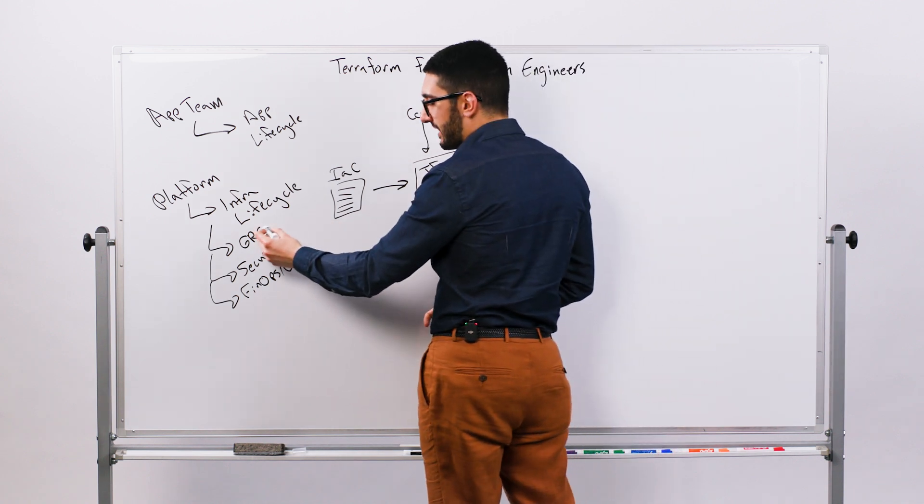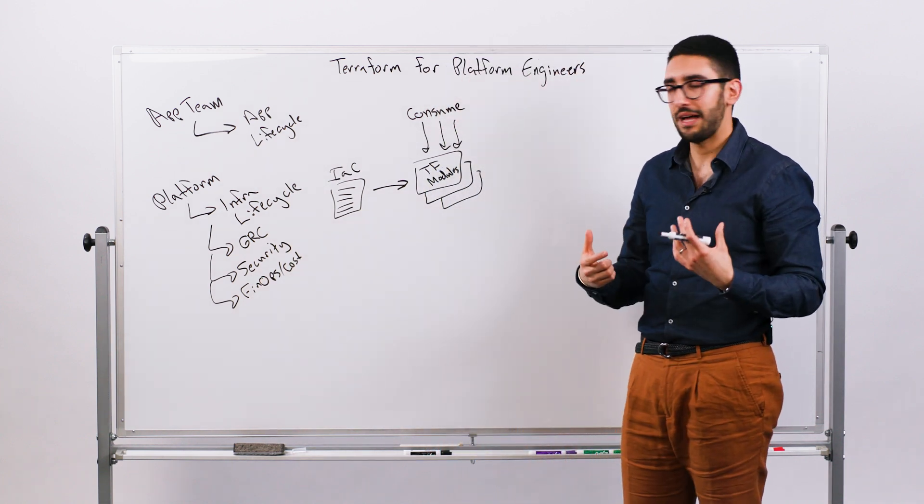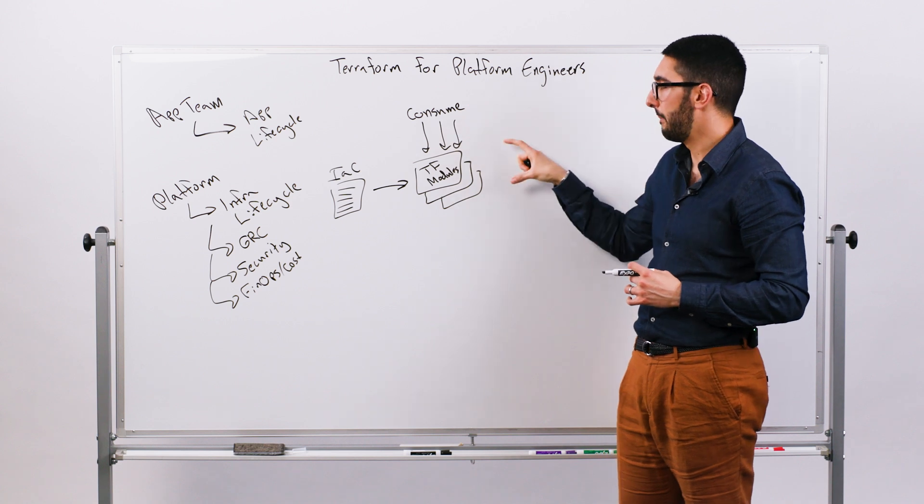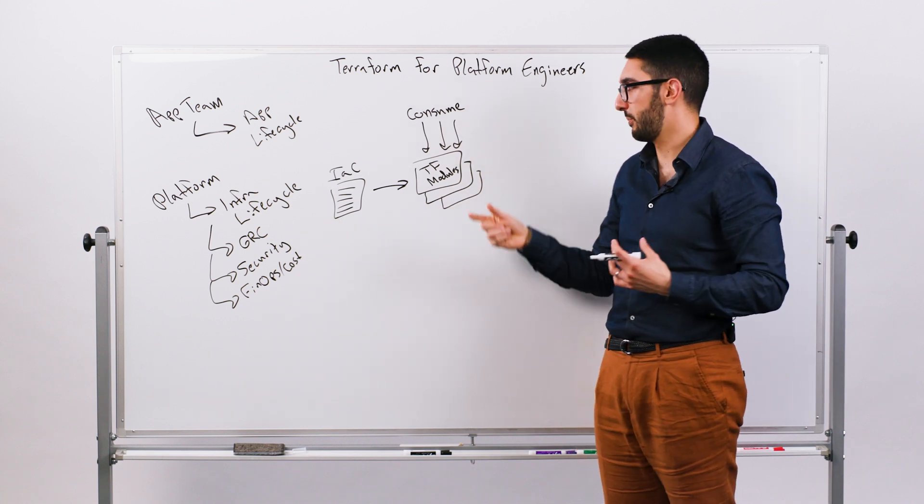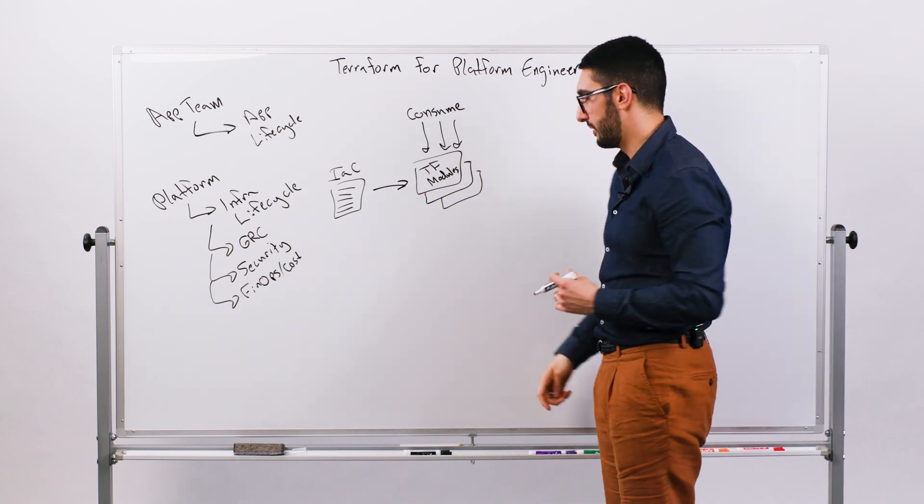Then when we start thinking about things like GRC, security, these other pieces, what we want to enable those platform teams is how do you still have self-service for the application teams, but bring some of those controls in so that you're not worried that a developer is taking the pattern and going way off rails and introducing, potentially a GRC issue for you.